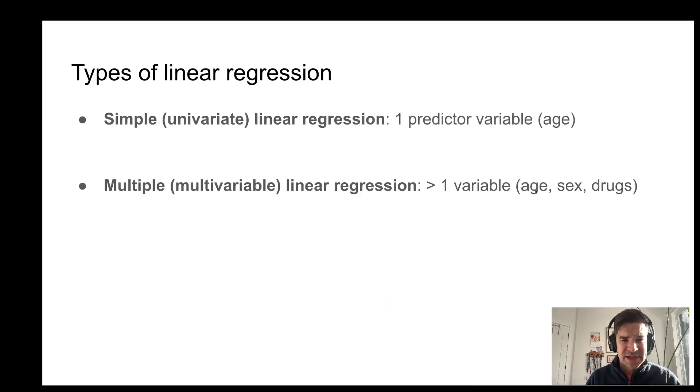There's different types of linear regression. Simple linear regression, where you have one predictor variable, and multiple linear regression, where you have multiple variables. It is not multivariate. It's multivariable. And that's a common mistake that people make.